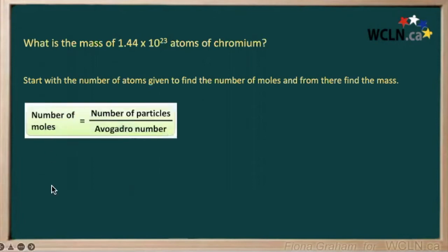Here's our formula to calculate the number of moles. You take the number of particles given, so that means our number of atoms, 1.44 times 10 to the 23, and divide that by Avogadro's number of 6.0 times 10 to the 23. We get approximately 0.24 moles of chromium.